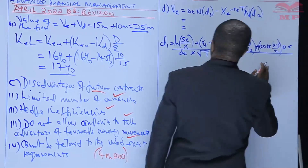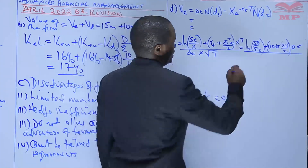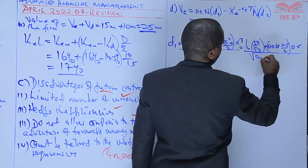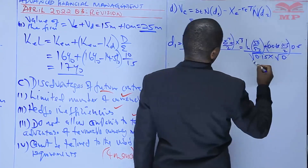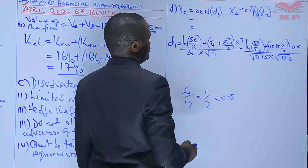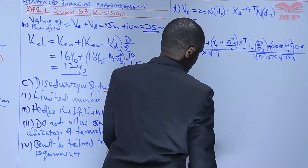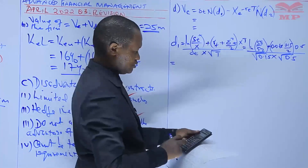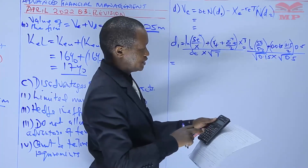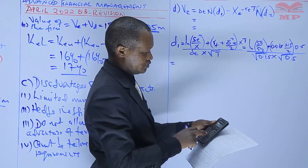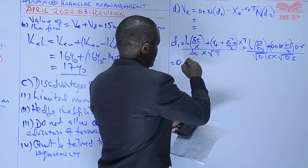We're going to divide that by the standard deviation. We know that the standard deviation is equal to the square root of the variance. Our variance here is 0.15. Then times the square root of time, 0.5. So we go to the calculator. The natural log is in the calculator. You punch natural log, open a bracket, 58 divide by 52, close the bracket. This is equal to 0.1092.